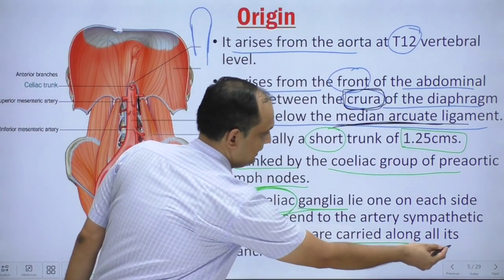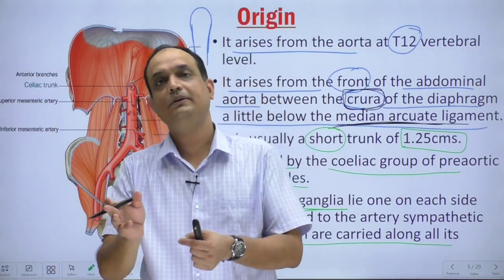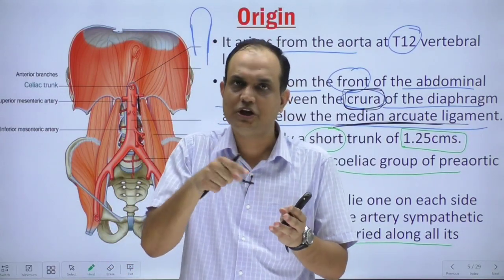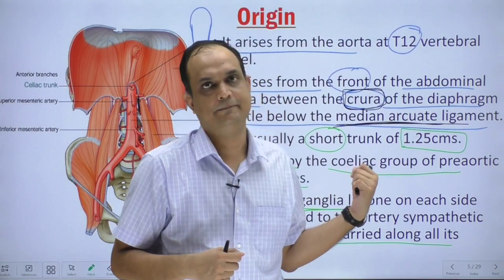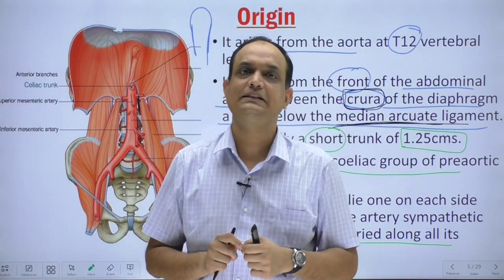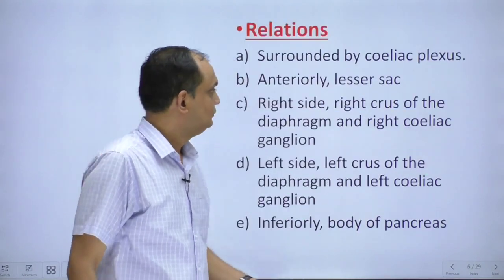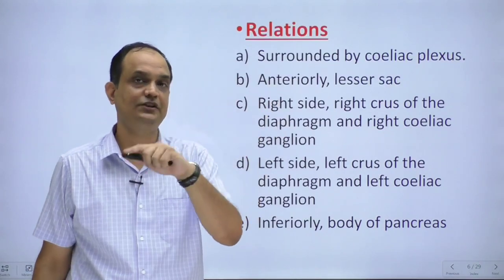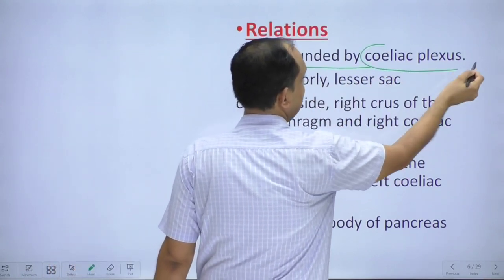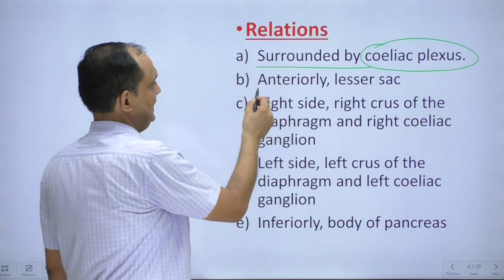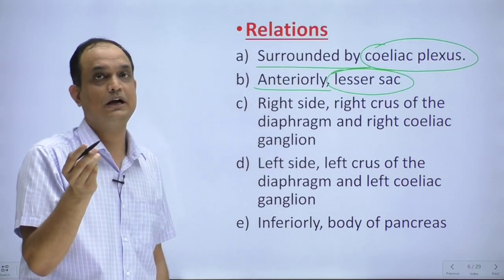Wherever the blood vessels go, there is a fine network of nerve plexuses alongside them, and these nerve plexuses reach their destination with the help of arteries. In summary, the celiac trunk is surrounded by the celiac plexus (a nerve plexus). It is anteriorly related to the posterior wall of the lesser sac. On the right side: right crus of diaphragm and right celiac ganglion. On the left side: left crus of diaphragm and left celiac ganglion. Inferiorly: the body of the pancreas.